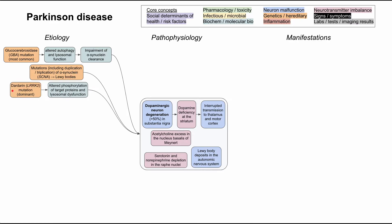The Dardarin gene mutation — LRRK2 — is an autosomal dominant mutation that leads to altered phosphorylation of target proteins and lysosomal dysfunction, likely also resulting in impaired alpha-synuclein clearance. Additionally, the Parkin mutation — PARK2 gene — is recessive and results in impaired turnover and clearance of mitochondria, also predisposing you to Parkinson's disease.